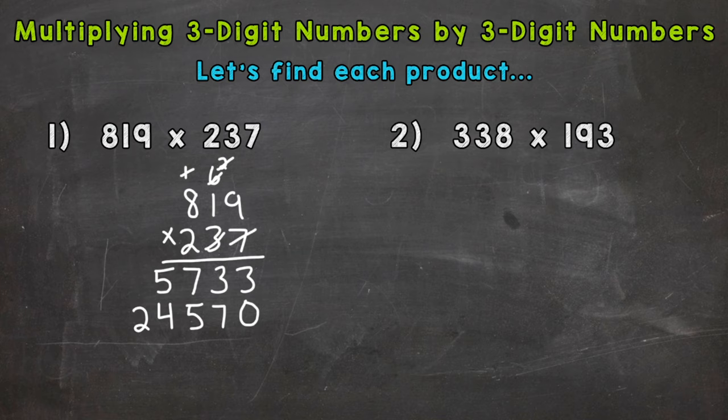Now we move to the 2 in 237 which has a value of 200, so we need two zeros. Now we do 2 times 9 is 18, carry the 1. 2 times 1 is 2 plus 1 is 3, and then 2 times 8 is 16. We get 163800.